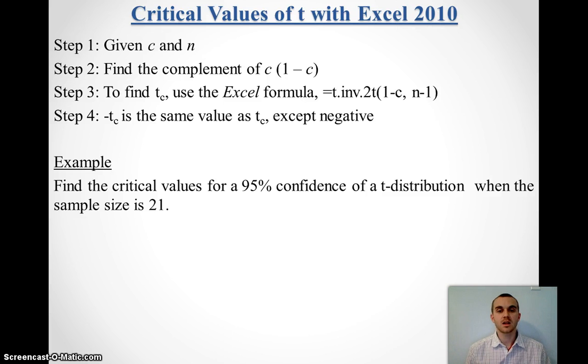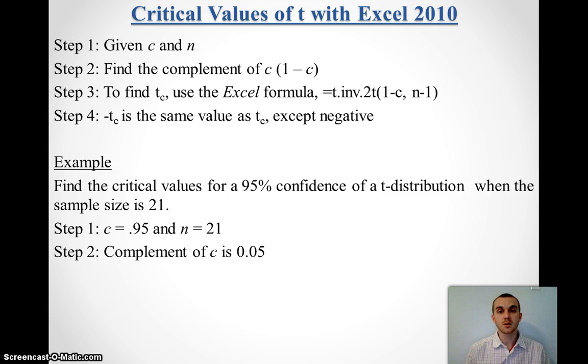So, say I'm looking at a 95% confidence of the t-distribution when sample size is 21. So, c value is 0.95, n is 21. I need my complement, which is 0.05, and I know my degrees of freedom would be 20.